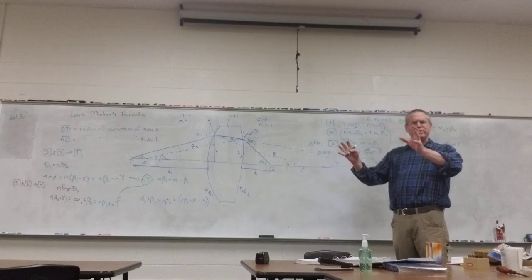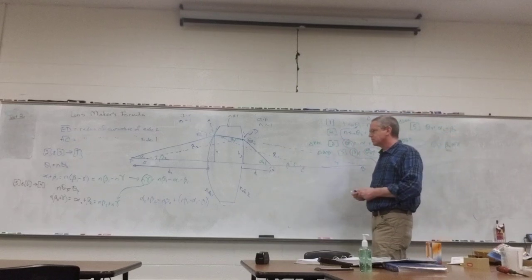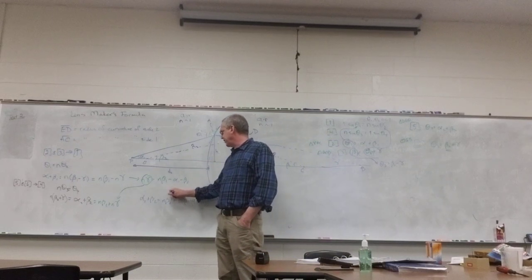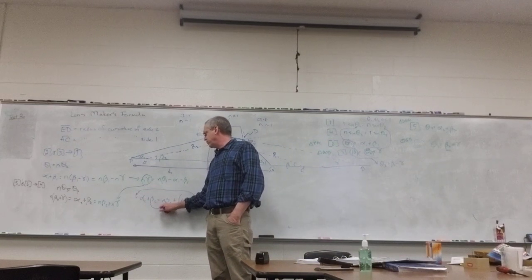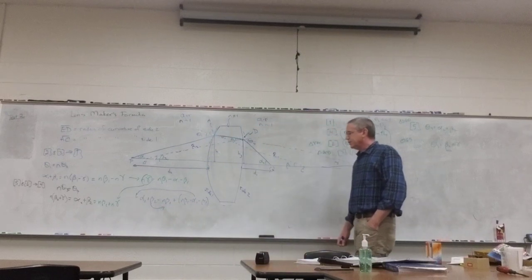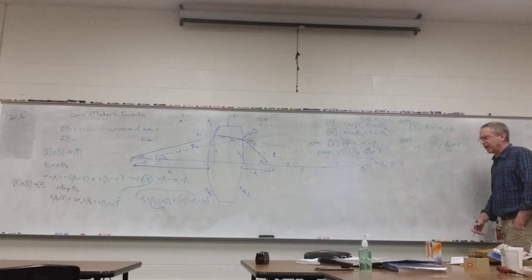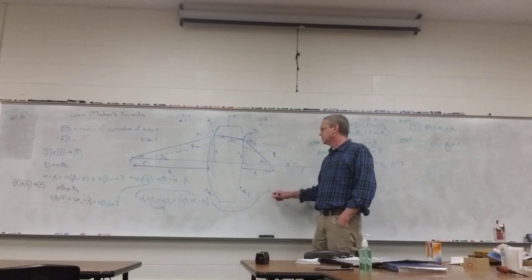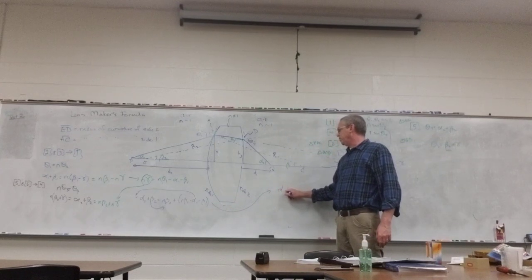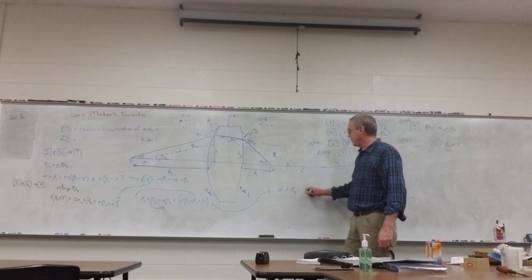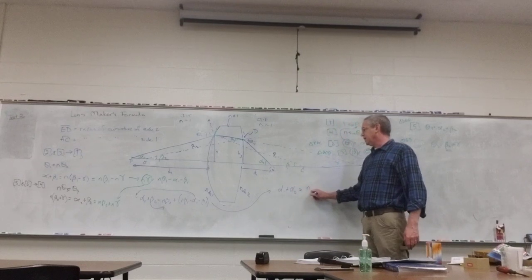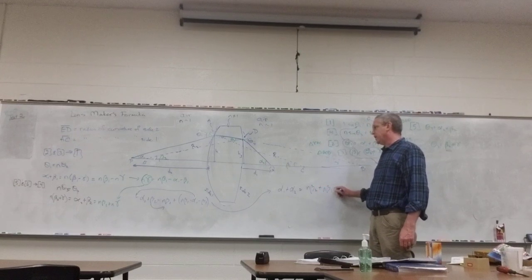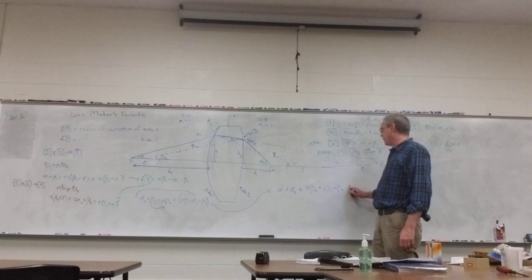At this point, I want to get alphas on one side and betas on the other. Let's get alphas over on the left-hand side and this beta over on the right-hand side. Since I'm adding and subtracting, I just do the opposite to get it over to the other side.